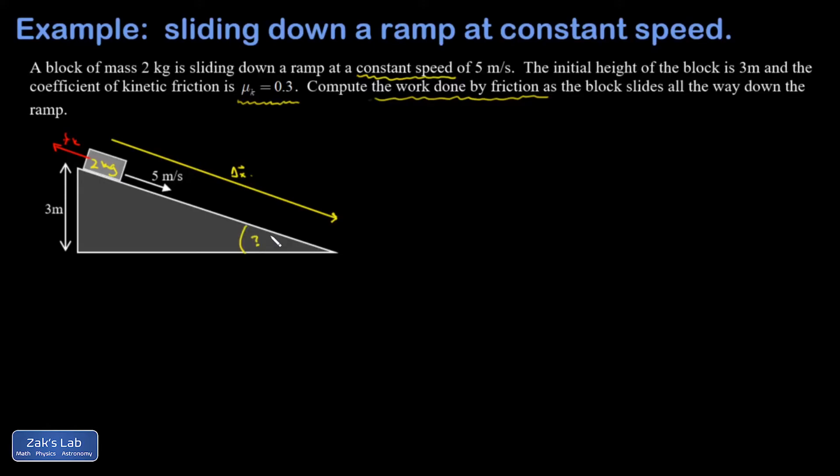So what's the concept behind this question? It's moving at a constant speed, and that means the net work must be zero. In other words, the work done by friction must be exactly the negative of the work done by gravity on the way down.